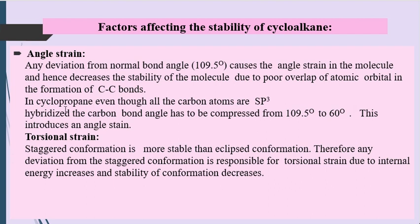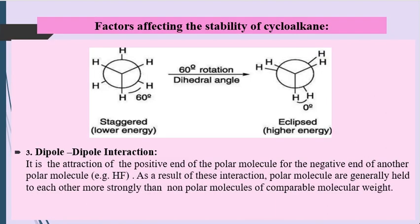The factors affecting the stability of cycloalkanes are: first, angle strain — any deviation from the normal bond angle of 109.5° causes angle strain, making the cycloalkane unstable. Second, torsional strain — the staggered conformation is more stable because groups are far from each other, while in the eclipsed conformation groups are maximally close, so deviation from staggered conformation increases internal energy and decreases stability.